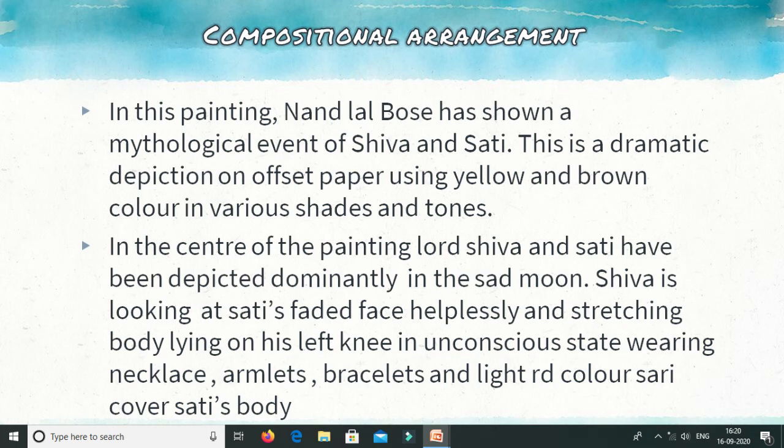You can see the description of Sati Ji: she is wearing a necklace, armlets, bracelets on her hands, and a light red color saree to cover her body. Sati Ji is fully ornamented — she has worn a necklace, armlets, and bracelets. She is resting in Shiva Ji's arms.